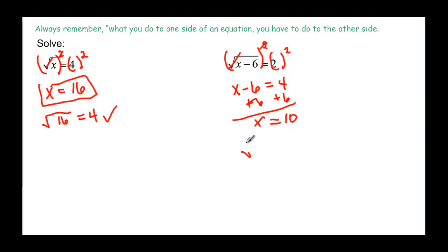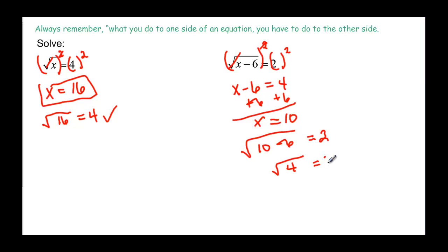Over here: is the square root of 10 minus 6 equal to 2? Well, the square root of 10 minus 6 is the square root of 4, and we all know the square root of 4 is 2. So we are certain that x equals 10.